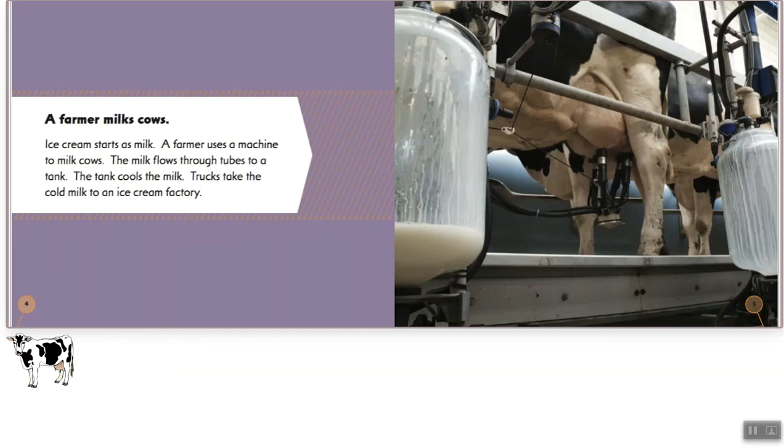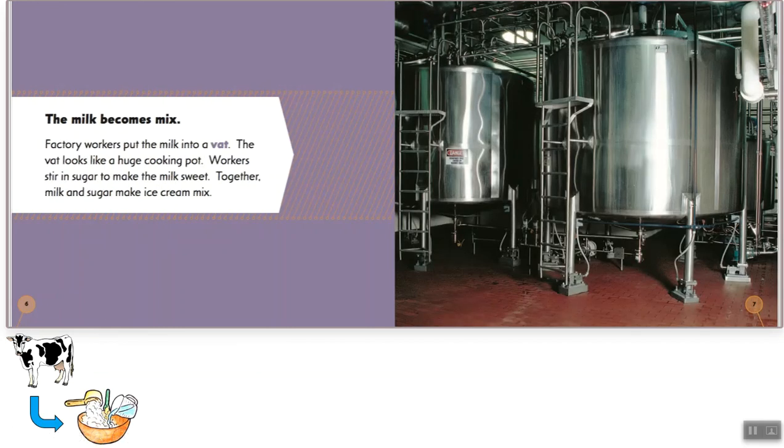So my image that I selected was a cow because the farmers are milking cows. The milk becomes mix. Factory workers put the milk into a vat. The vat looks like a huge cooking pot. Workers stir in sugar to make the milk sweet. Together milk and sugar make ice cream mix. So my image is going to be some sugar and things getting mixed and you can see cow milk leads to it getting mixed.